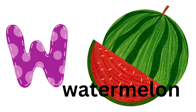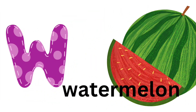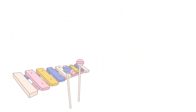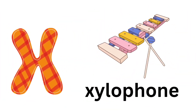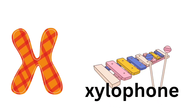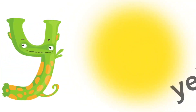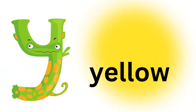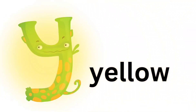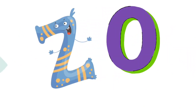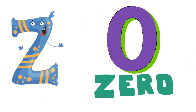R for red, S for sheep, T for train, U for umbrella.